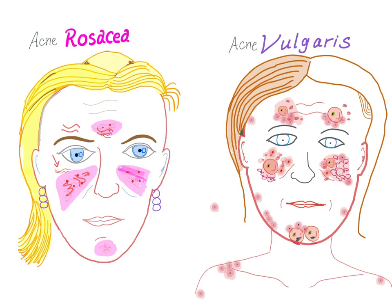What's the distribution? Acne rosacea has a central distribution — central face — sometimes referred to as T-distribution or cross-distribution. However, acne vulgaris is very widespread and can affect any part of the face. Furthermore, acne rosacea is only limited to the face, while acne vulgaris can be on the face, shoulders, arms, back, or even buttocks.